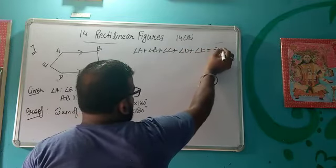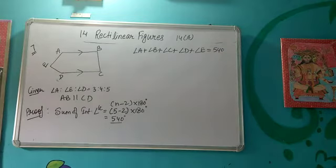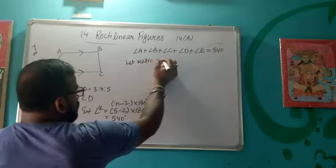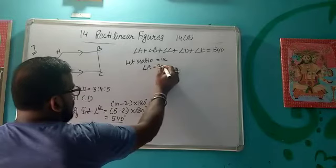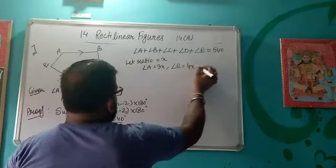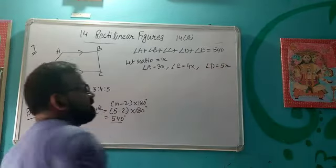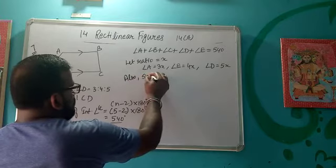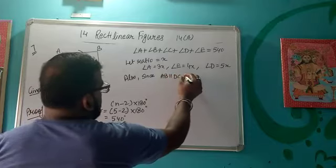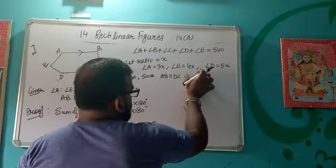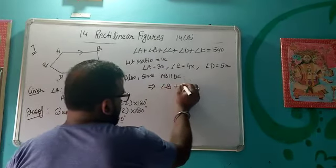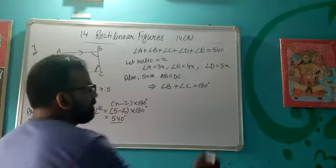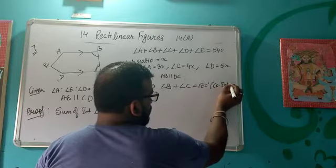We need to find angle E. Let the ratio equal x, so angle A becomes 3x, angle E becomes 4x, and angle B becomes 5x. Also, since AB is parallel to DC, angle B plus angle C equals 180 degrees — they form a pair of co-interior angles.